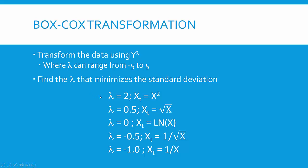For example, if you do this and you discover lambda equals 2, that means your transformed data then is the square of x. Or if lambda equals 0.5, it's the square root of x.